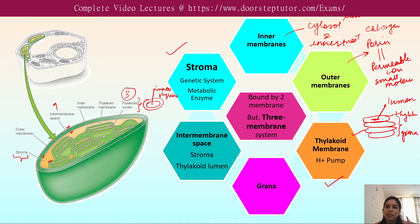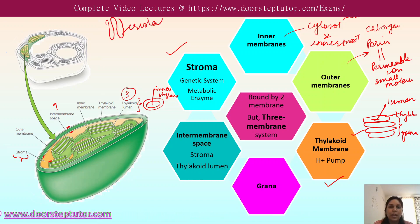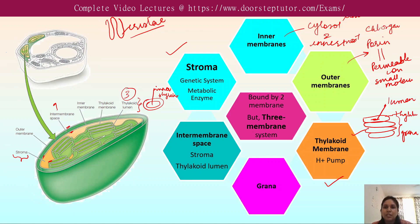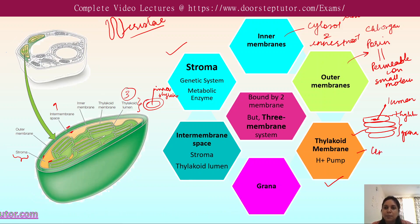In the mitochondria, the inner membrane plays a very important role in the electron transport chain and oxidative phosphorylation, because in the mitochondria the inner membrane is folded into a cristae-like structure. In the chloroplast, the inner membrane is not so much folded. Therefore, the electron transport series does not occur in the inner membrane — it takes place in the thylakoid membrane. In this way, the thylakoid membrane is the central player of the chloroplast structure.